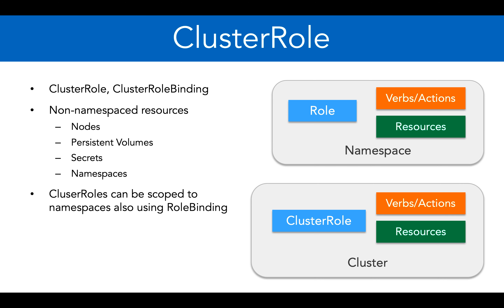We can also scope a cluster role to a specific namespace using role binding — meaning we can create a cluster role and then use a regular role binding instead of cluster role binding to associate it in a particular namespace. There is also something called cluster role aggregation, which allows multiple cluster roles to be combined together in a single block, though we will not go into detail on that.